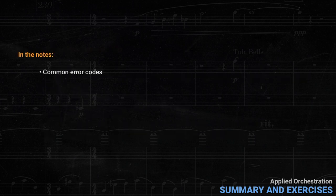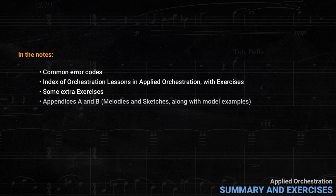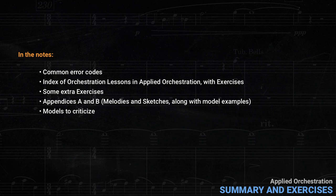I've included in the notes common error codes. These are errors that came up so often that it was worth making abbreviations for them, so I didn't have to keep rewriting the same things in detail. After that, there's an index of the individual lessons in this Applied Orchestration course, with exercises for those for which it's pertinent. Then there are some extra exercises and a couple of appendices — melodies and sketches mainly — along with model examples. Finally, there's an example of a sketch realized in four or five different ways. You should compare and criticize the different examples; some are much better than others. When something isn't satisfactory, try to be specific about what the problem is. There's a link below to the PDF with the exercises.